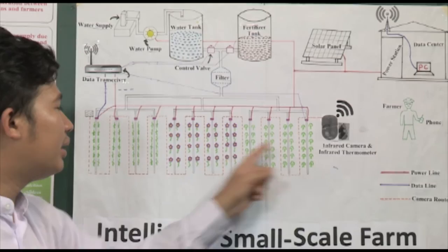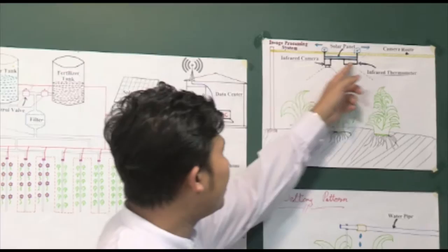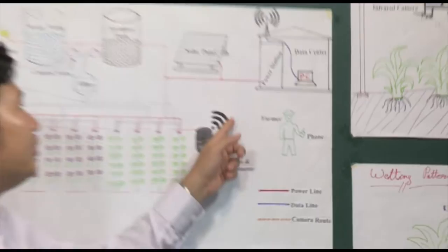The movable infrared camera captures the whole farm, and the infrared thermometer measures the plant's temperature along the camera route. These two equipment are attached on the camera route, as shown in figure.